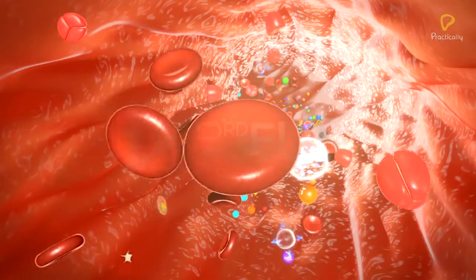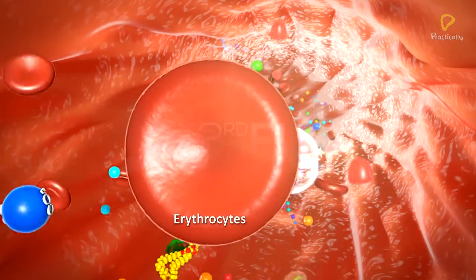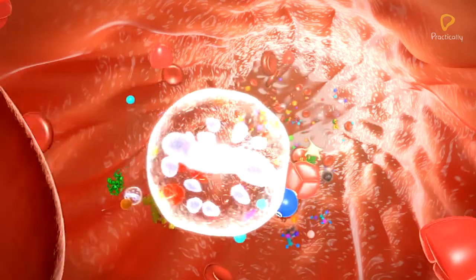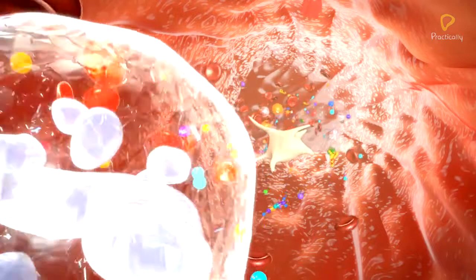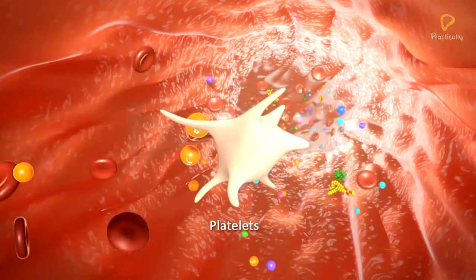Formed elements include erythrocytes, leukocytes, and platelets.